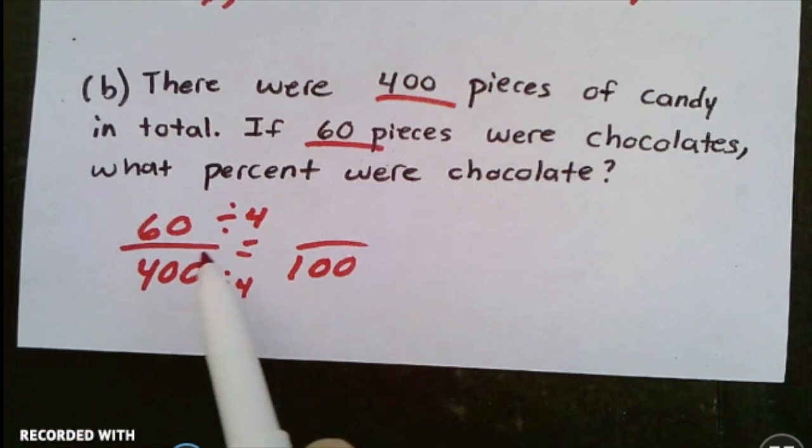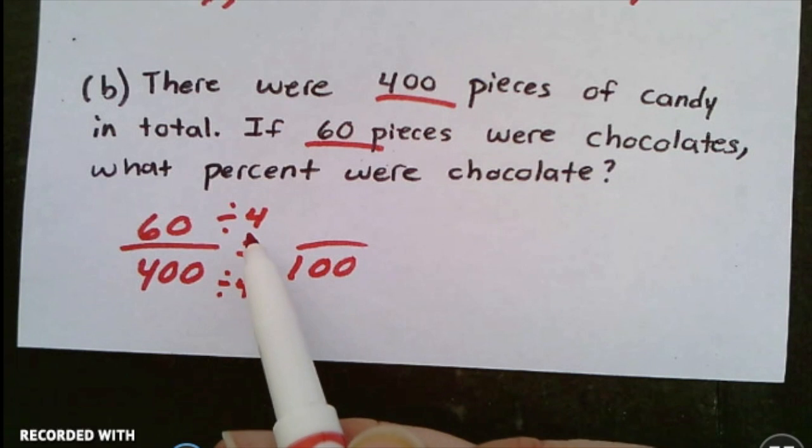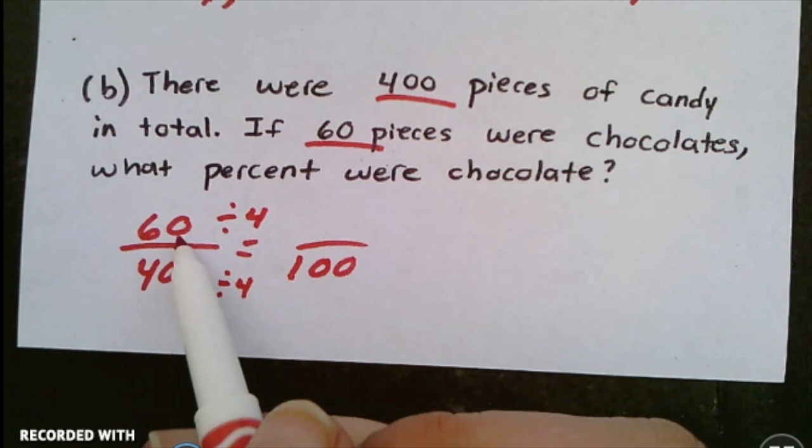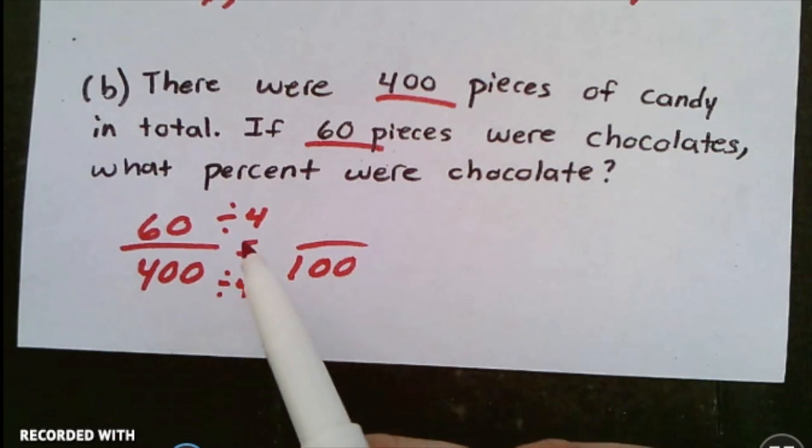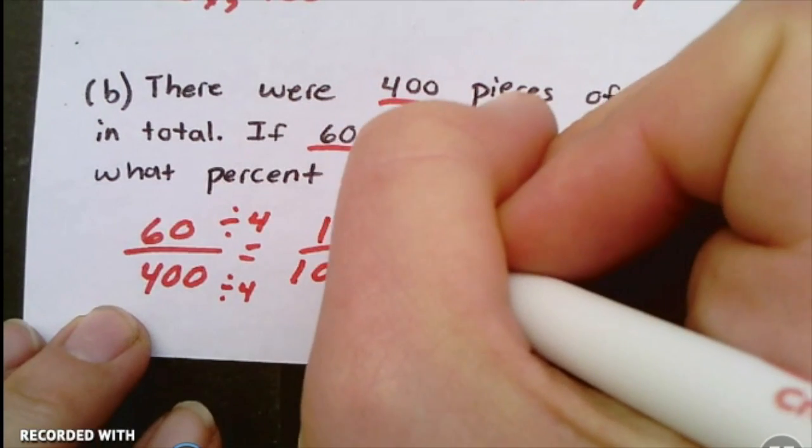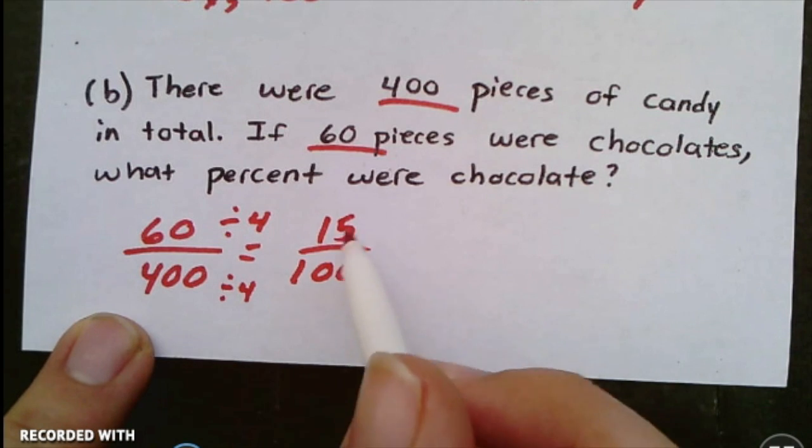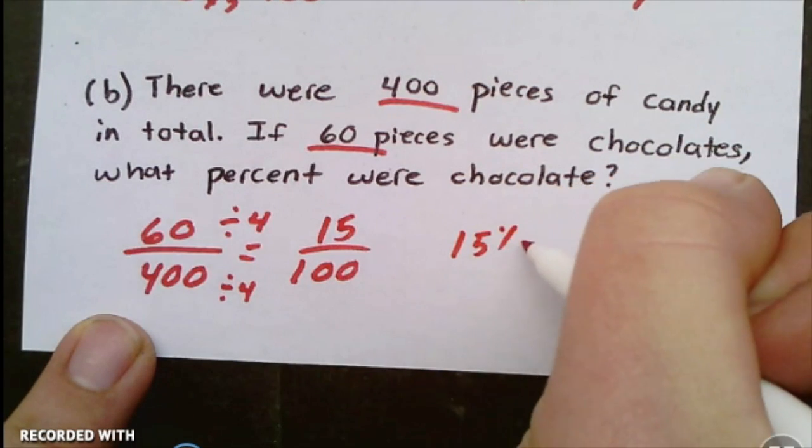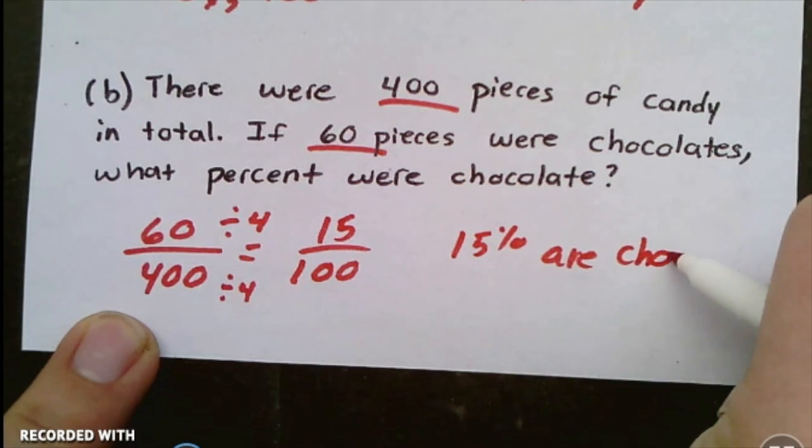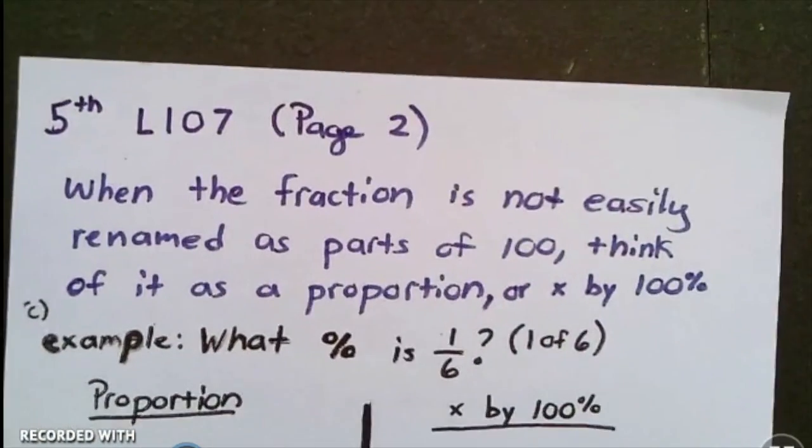If I divide 400 by four I'll get a hundred, so then I can divide 60 by four. Dividing by four is like dividing by two and then dividing by two again. If I cut 60 in half I have 30, and if I cut 30 in half I have 15. If I didn't know how to do that I could write out 60 divided by four, but here I got my answer: it is 15 percent are chocolate.